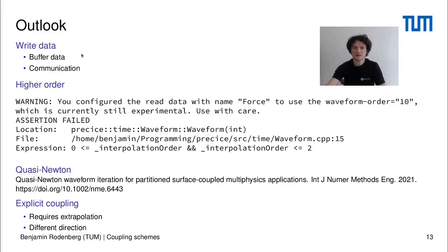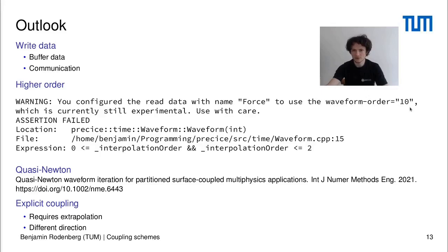Let me finish by summarizing some of the steps we still have in mind for waveform iteration. First, we also have to implement the write direction for our time interpolation — this means we want to buffer data that we get when we are subcycling, and we also have to communicate several pieces of data within one time step. Additionally, it would be nice to have higher order than just linear interpolation. Currently, if you want to use for example waveform order 10, you just get an assertion failure, and if you really want to use higher order time stepping schemes, probably linear interpolation is not enough — you would need higher order interpolation schemes.